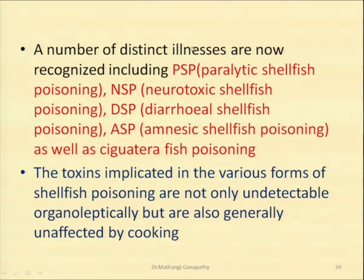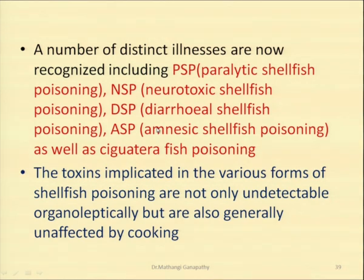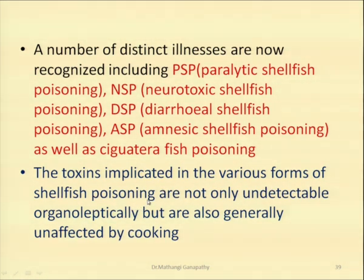A number of distinct illnesses are now recognized, including PSP — paralytic shellfish poisoning — NSP — neurotoxic shellfish poisoning — DSP or diarrheal shellfish poisoning, ASP or amnesic shellfish poisoning, as well as ciguatera fish poisoning. All the toxins implicated in the various forms of shellfish poisoning are not only undetectable organoleptically, but are also unaffected by cooking. This is actually a major problem.